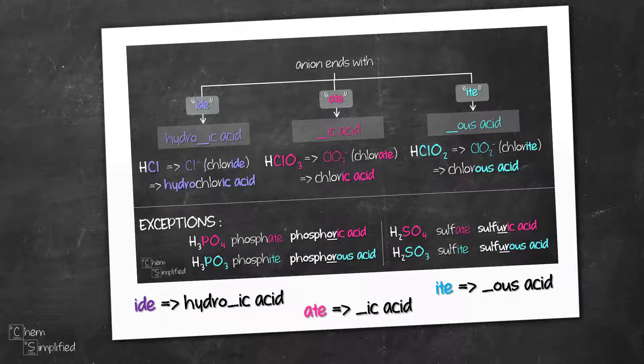In this video, we're going to name three types of acid where the anion ends with IDE, ATE, and ITE.